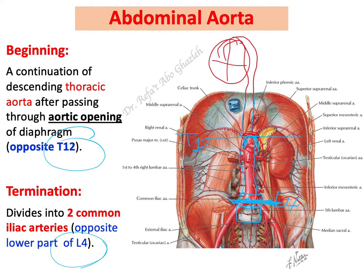At the level of L4, the abdominal aorta divides into two branches: the right and left common iliac arteries. When you hear 'common,' that means it will divide into two or more branches. In this case, the common iliac divides into the external iliac and the internal iliac.